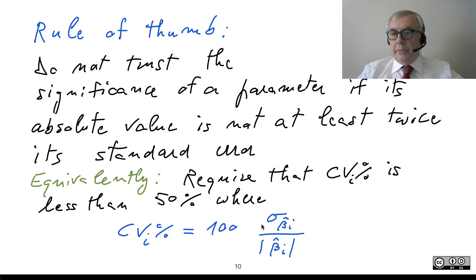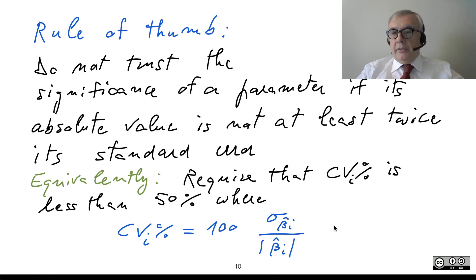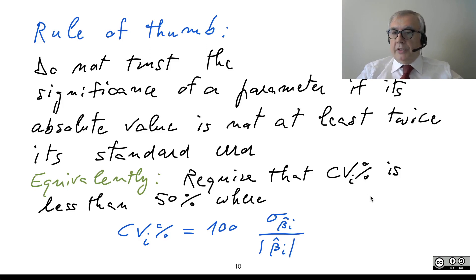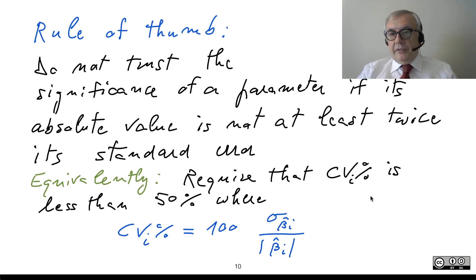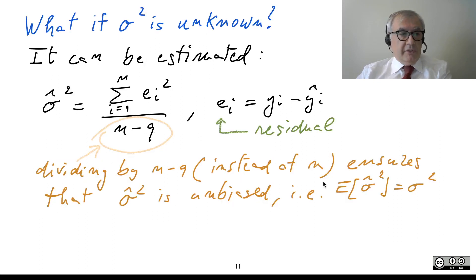The idea is that if this percent CV is larger than 50%, then the null hypothesis could be accepted. So in order to trust a parameter, you require that the associated percent coefficient of variation is less than 50%. This is a useful rule of thumb.